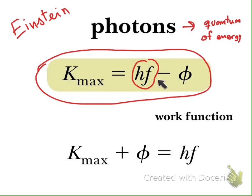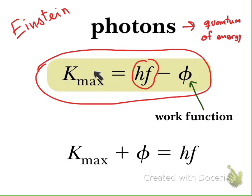When a photon hits the metal plane, it gives this energy to the electron. But the electron needs some energy to escape from the surface of the metal, and that energy is called the work function. The work function is the energy that an electron needs to escape the surface. We use the symbol phi for it. So the energy from the photon minus the work function equals the kinetic energy of the electron.